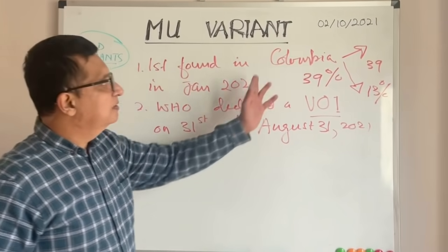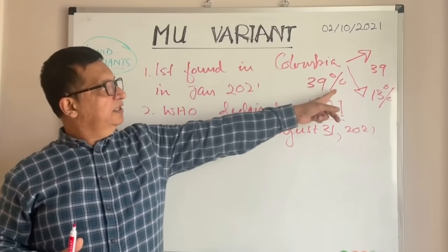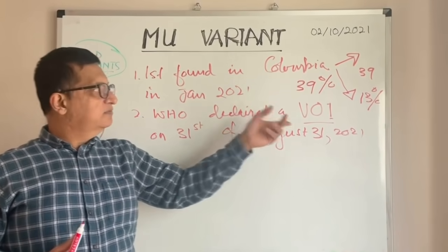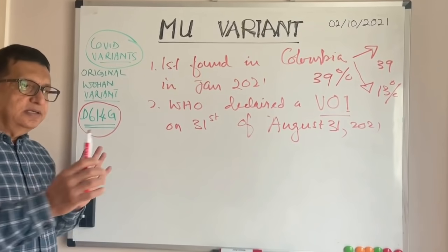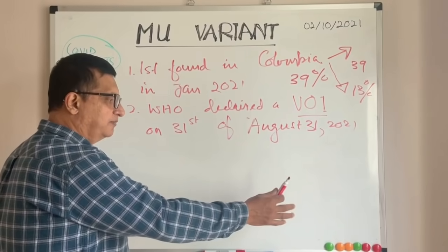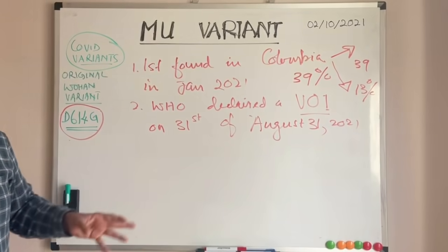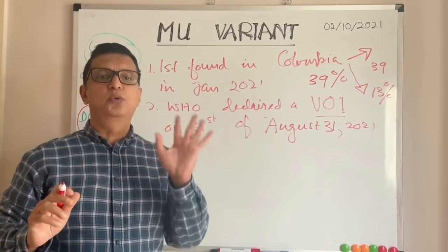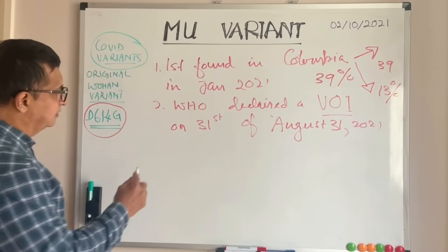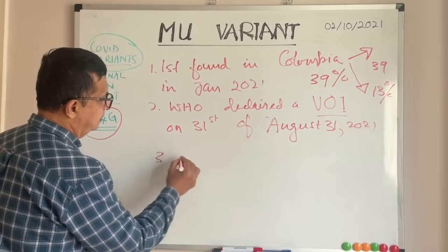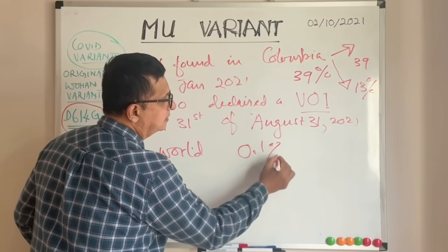This means the mu variant, even though it has many mutations in the spike protein, could not dominate as much as expected. The reason behind it is possibly those other 12 mutations in the rest of the genome, which perhaps contributed in a negative way — though we don't know for certain. The worldwide predominance of the mu variant is only 0.1 percent up to now.